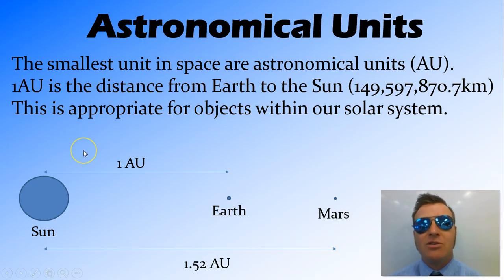And these are fine for measuring things within our solar system. An astronomical unit is defined as the average distance between the Earth and the sun throughout its rotation. And the Earth does move closer and further away from the sun. It's not a perfect circle. But we just take an average of that and call that one astronomical unit.